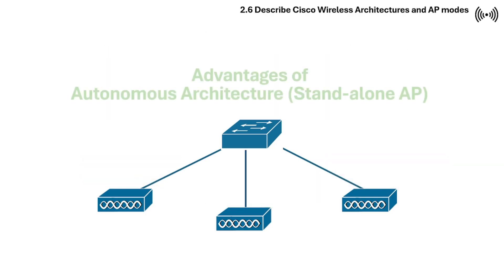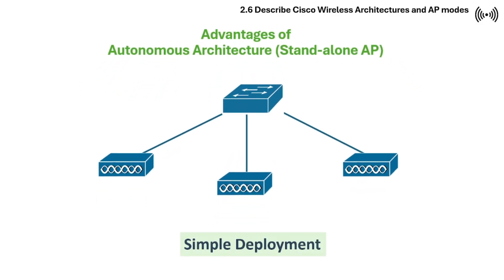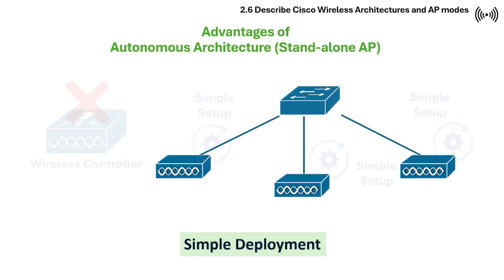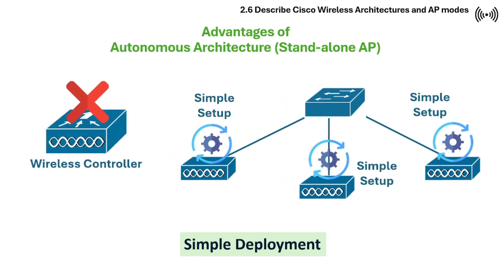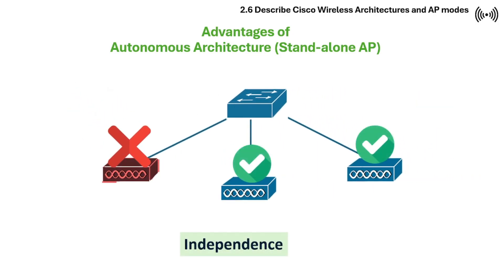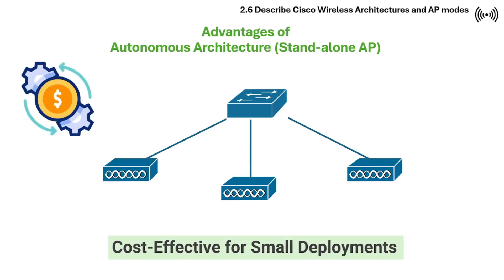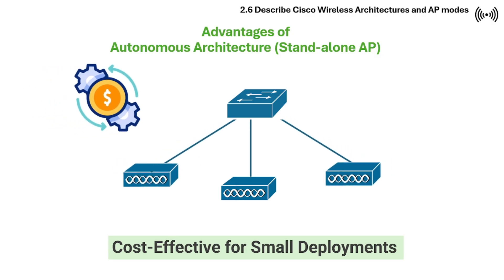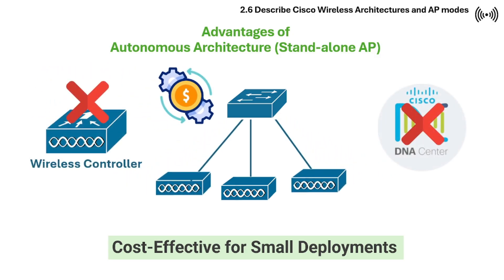Here are the advantages of autonomous architecture. First is simple deployment — there's no need for a separate wireless controller, which simplifies the initial setup. Next is independence, where each access point operates on its own, meaning the failure of one access point doesn't impact others. Another advantage is cost-effectiveness for small deployments, as there is no need for expensive wireless controllers and subscriptions for centralized management solutions.